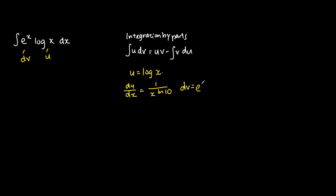My dv itself is e to the power of x, so my v is basically just e to the power of x because the integration of e to the power of x is itself.